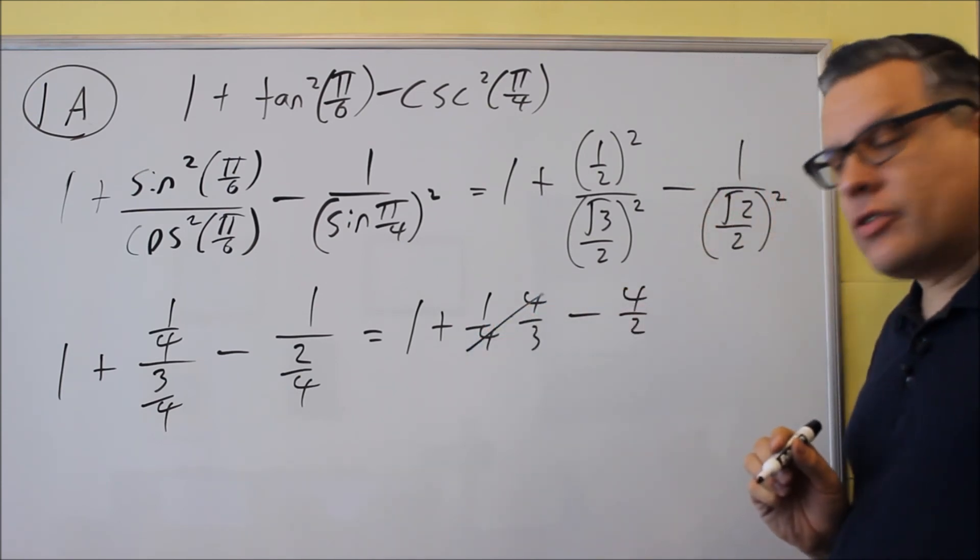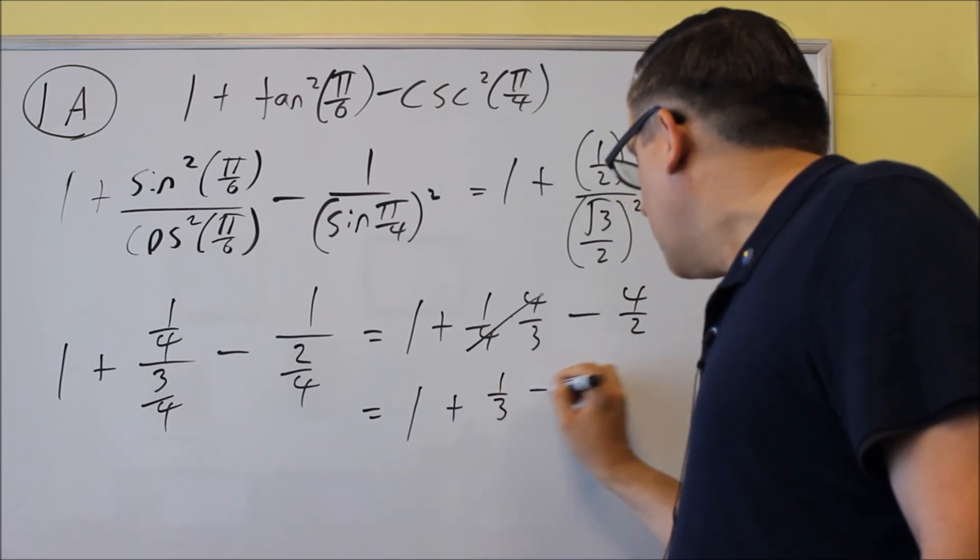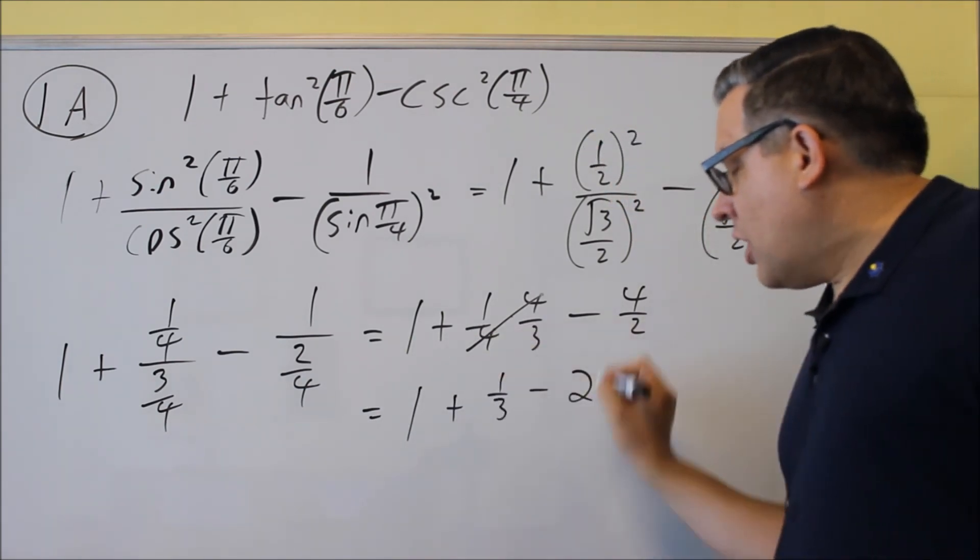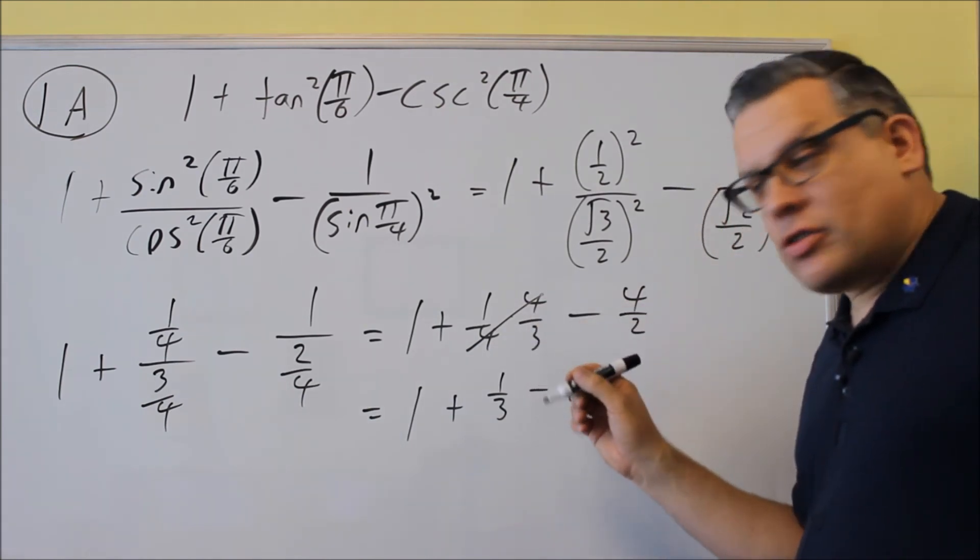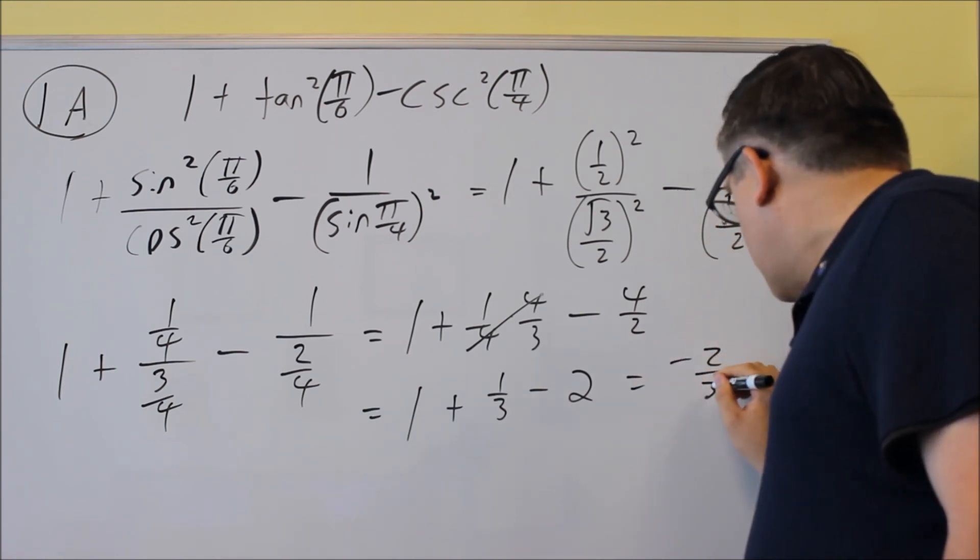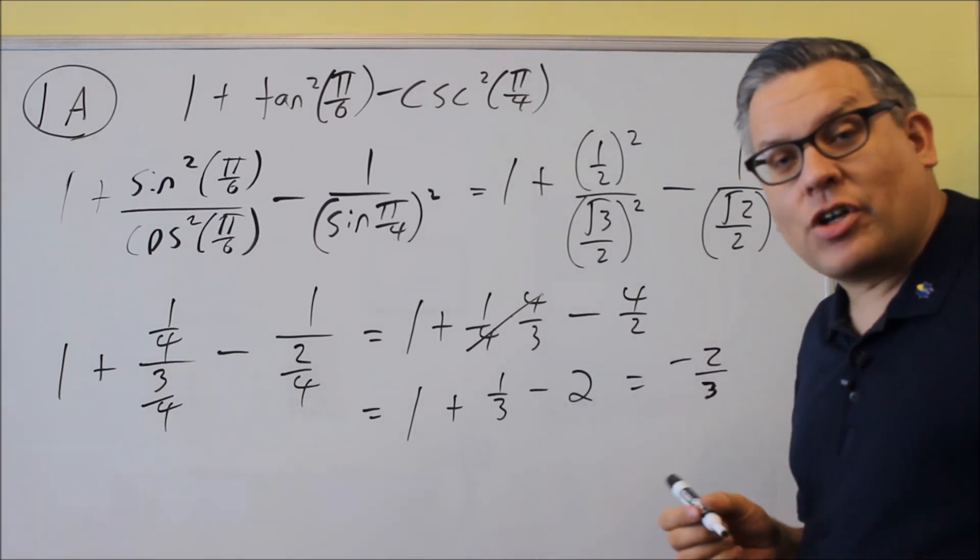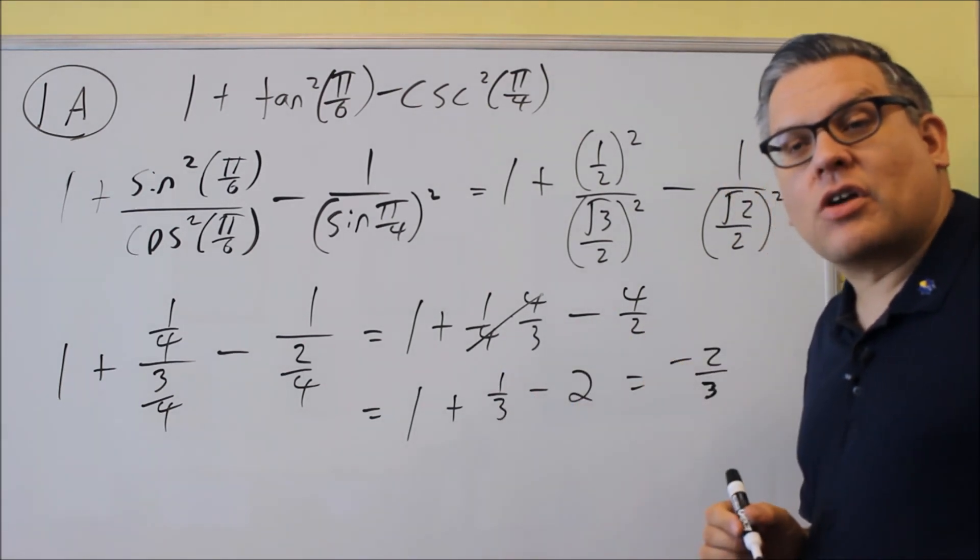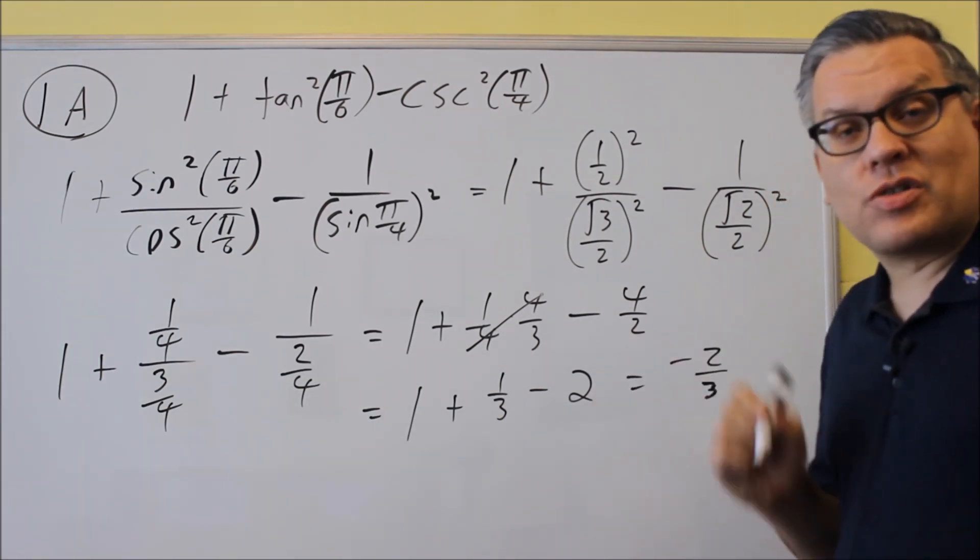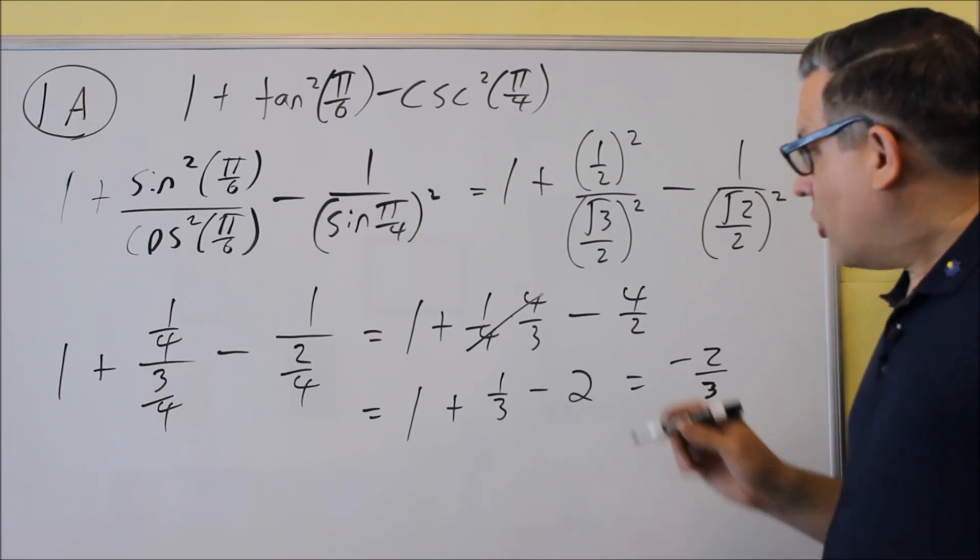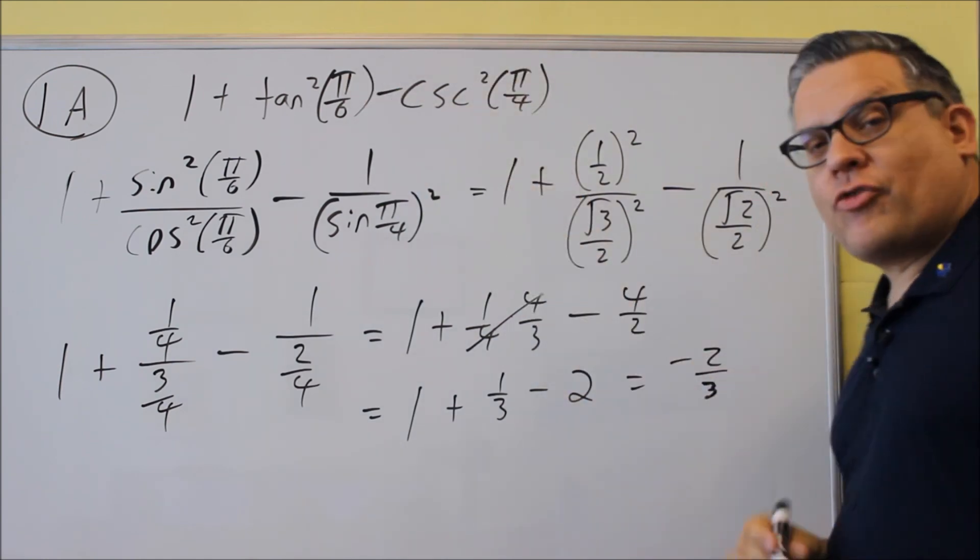Next thing we'll do is flip and multiply. So 1 plus 1 fourth times 4 thirds minus, this one is 4 over 2, when we flip that one. The 4s are going to cancel out on this one, and this can be turned into a 2. So then you would have 1 plus 1 third minus 2, and you can just put that into the calculator and get negative 2 thirds. So make sure you bring a calculator for the final exam because they're not going to have any provided, especially if you're taking this in a testing center. This would be your final answer, the exact value. This whole entire expression would simplify to negative 2 thirds.